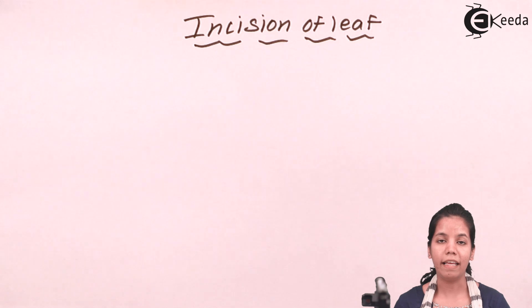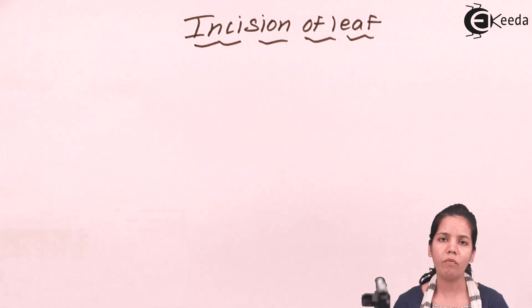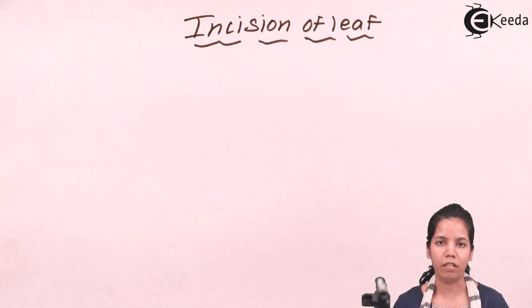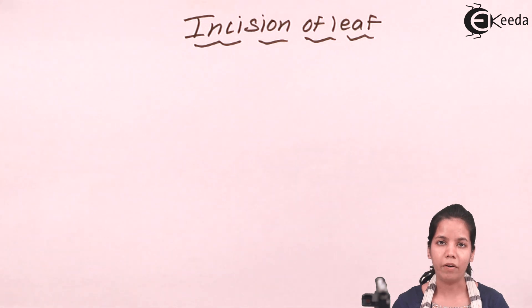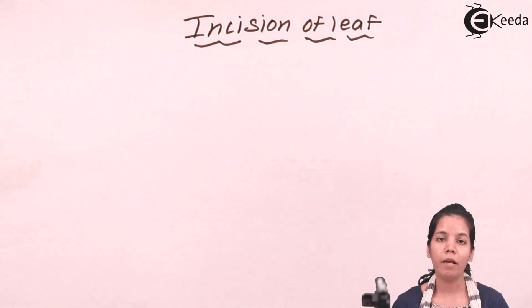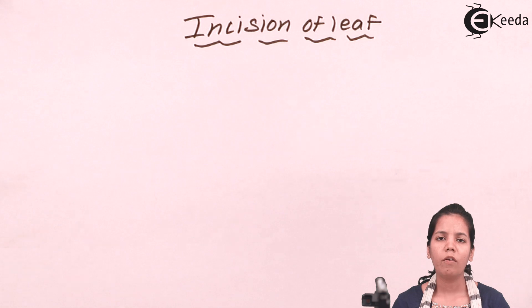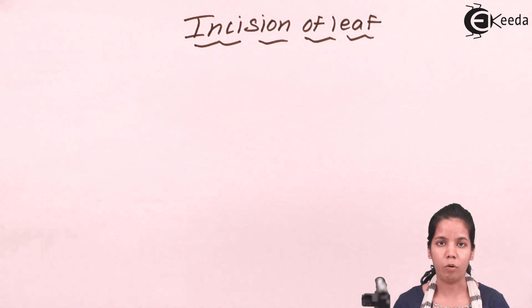We all have seen that there are veinlets or veins present on the surface of the leaf, and there is a mid-rib, or you can say the central rib, present in the leaves through which various veins and veinlets come up.